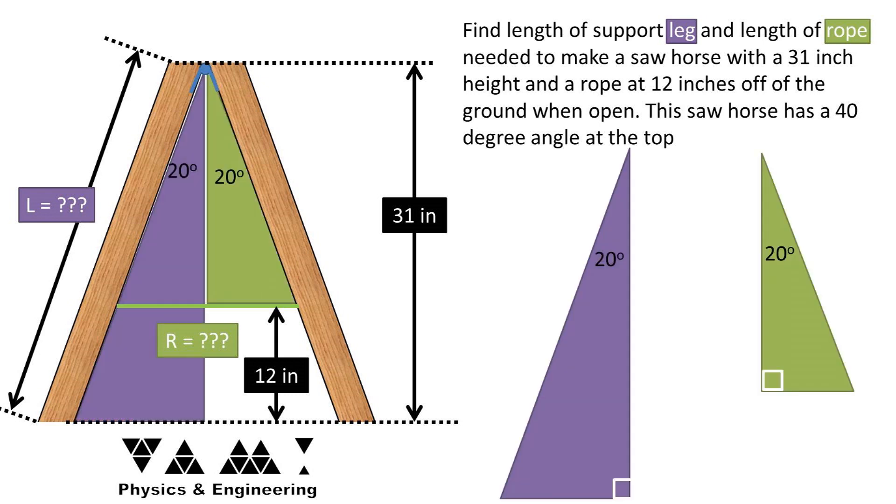We need to will some right triangles into existence. We have a right triangle whose hypotenuse or longest side is the length of the board on one side from cut to cut, and we have another triangle whose adjacent side length is half the length of the rope. Both of these triangles cut the 40 degree angle in half, so they now each have 20 degree angles at the top of each triangle.